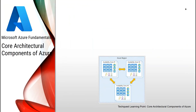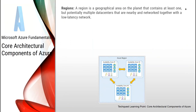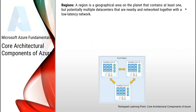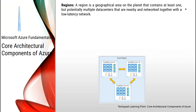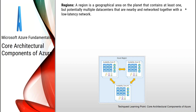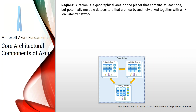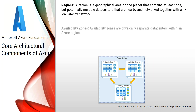A region is a geographical area on the planet that contains at least one but potentially multiple data centers that are nearby and networked together with a low-latency network.